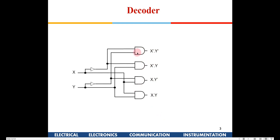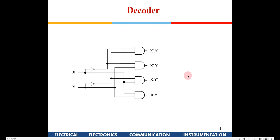To implement this in hardware, we use AND gates and inverters. For the first AND gate, the inputs are X-bar and Y-bar — when X is 0 and Y is 0, the inverters produce 1 and 1, so D0 goes high. For the next combination, X-bar and Y gives D1 high. Similarly for X and Y-bar giving D2, and X and Y both one giving D3. We require two inverters and four AND gates.